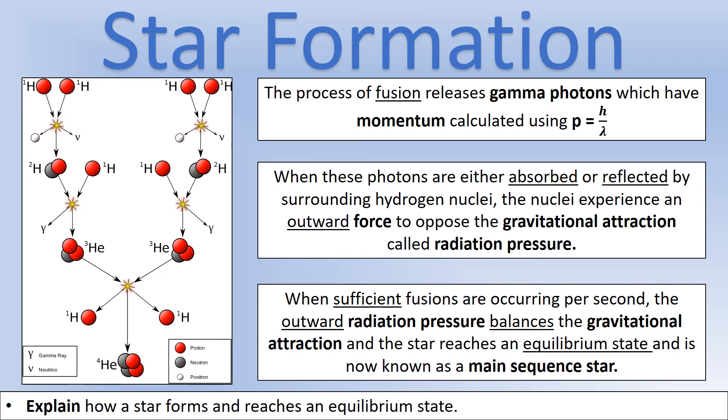Just like with particles, if a photon is either absorbed by or is reflected off of something else, that object will experience a force, just like if you throw an object at a wall. And it's this force that stops the star collapsing in on itself. The star is trying to collapse due to gravitational attraction, and this outward force is known as radiation pressure. If we are having enough fusion reactions occurring, the outward radiation pressure will be equal to the gravitational attraction, and this is how an equilibrium state is formed. This star will now be known as a main sequence star.